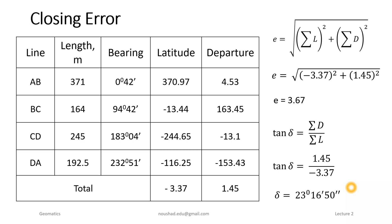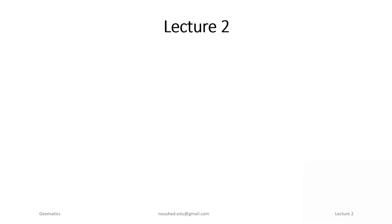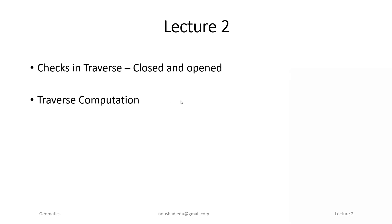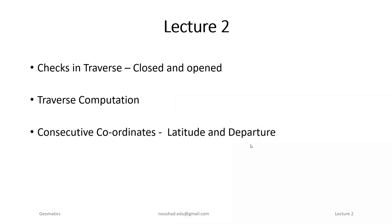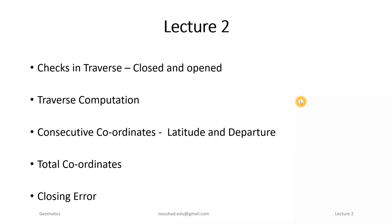In Lecture 2 we have discussed the checks in traverse: linear check and angular check for both closed and open traverse. We covered traverse computation, consecutive coordinates (latitude and departure), independent coordinates, total coordinates, and the closing error. That is all for this lecture.